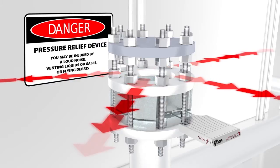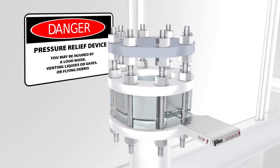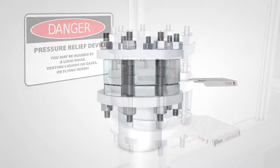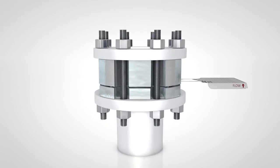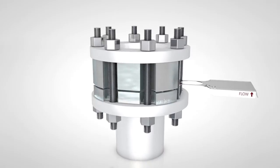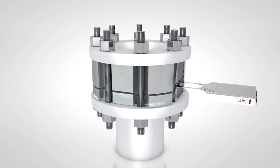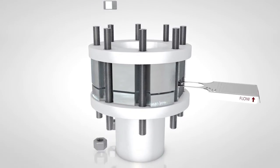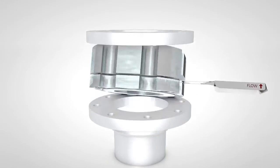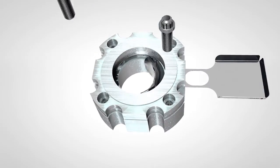To install a new rupture disc, remove the burst rupture disc assembly from its piping. Use caution as a rupture disc may have sharp edges. Remove cap screws and separate the holder components.